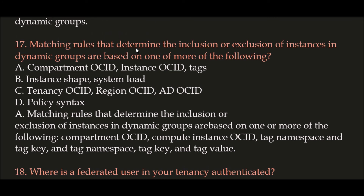Question 17: Matching rules that determine the inclusion or exclusion of instances in dynamic groups are based on one or more of the following. The correct answer is Option A: compartment OCID and instance OCID. Matching rules are based on compartment OCID, compute instance OCID, tag namespace and tag key, or tag namespace, tag key, and tag value.